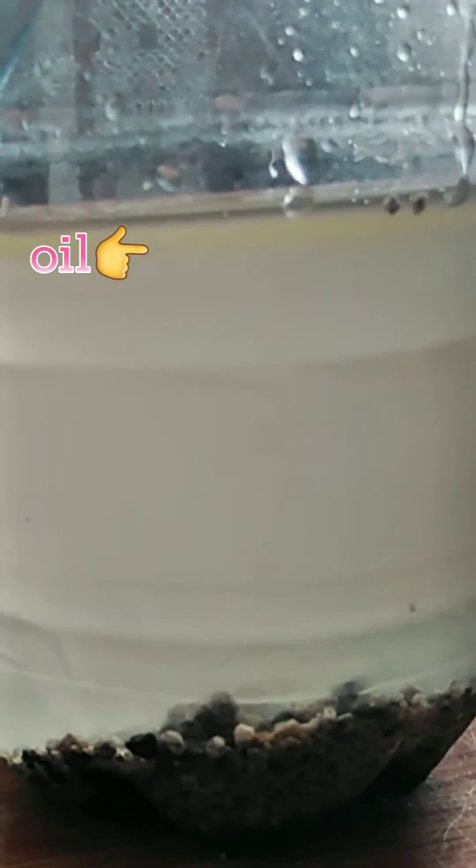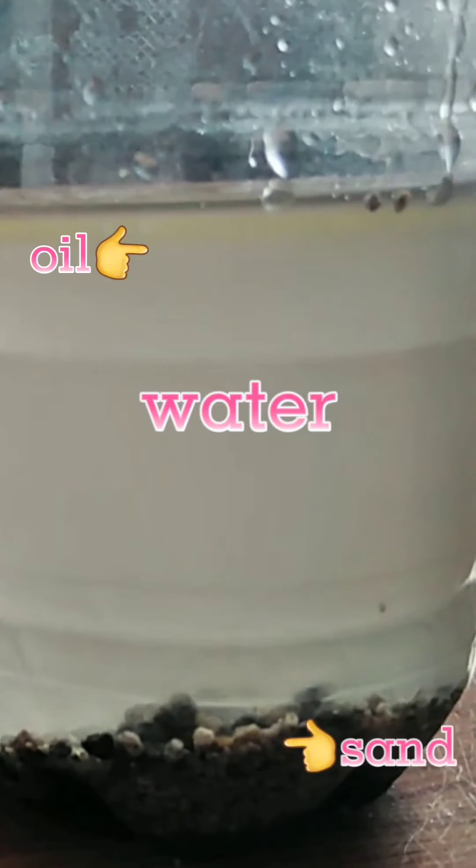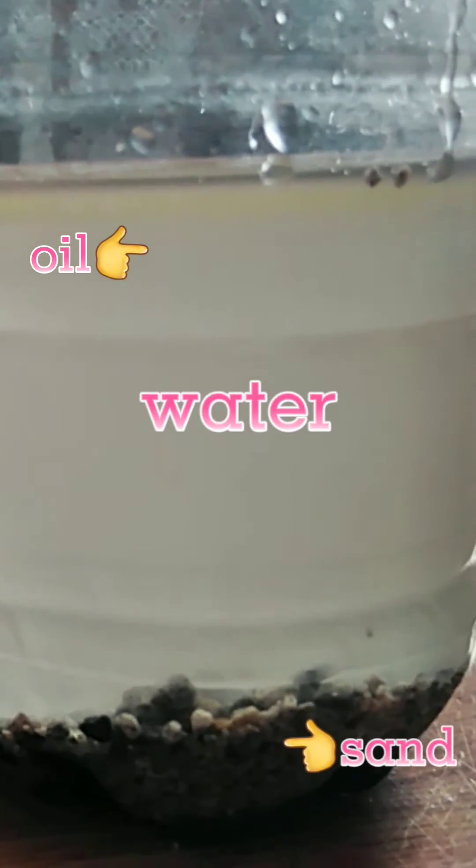The oil floats above the water because the water is more dense than the oil. And the sand is more dense than the water.